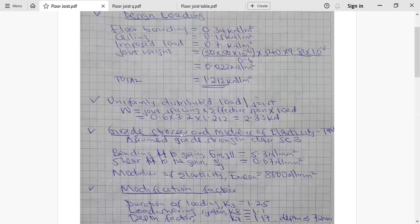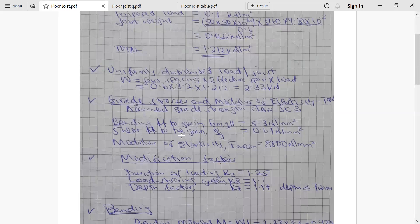This second step, I will calculate the uniformly distributed load per each joist. So this load W is given by joist spacing multiplied by effective span multiplied by the total load: 0.6 times 3.2 times 1.212, we get a value of 2.33 kilonewton.